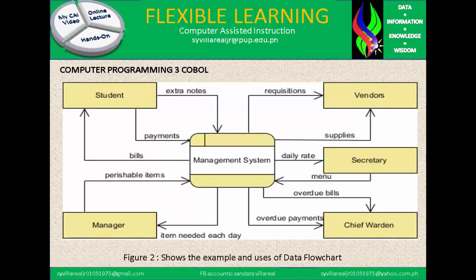In figure two, the example of a data flowchart shows the student making extra payments going to management. Management bills the student. The manager handles items needed each day, perishable items, and then the vendor. The secretary feeds back to management, and then the chief warden oversees payments. That's the figure of a data flowchart.